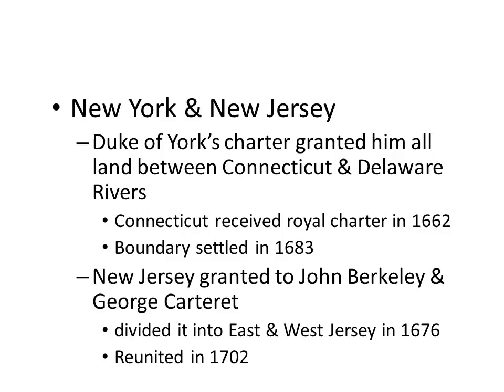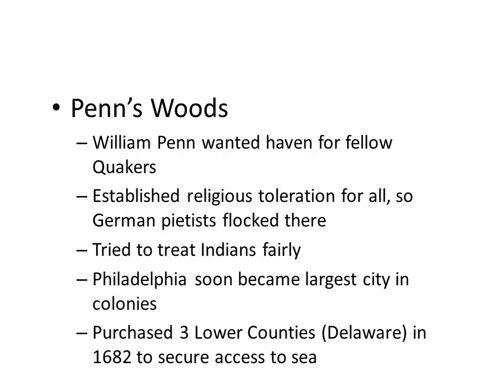New Jersey is going to be given to a man named John Berkeley and George Carteret, and they're going to divide it into East and West Jersey for a while and reunite the colony later on.